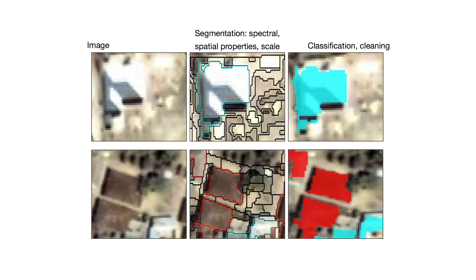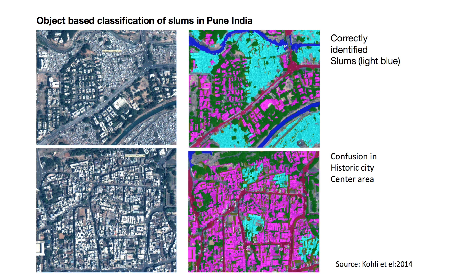We've been working on this in a number of contexts. Here I'm showing one application in the city of Pune in India. The results are mixed so far — we're getting an overall accuracy of about 80 to 85% in our ability to identify slums with current methods. It works particularly well in some areas, but in the historic city centre of Pune there's considerable confusion between old neighbourhoods and slum areas. This shows the importance of having local knowledge to make actual judgements about what is correct when doing this type of image analysis.